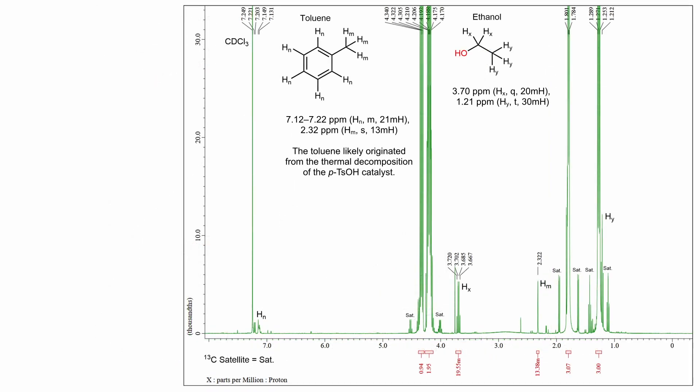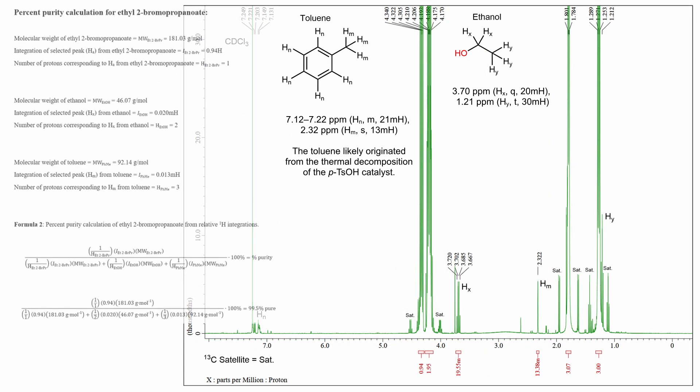Most of the smaller peaks around the baseline can be attributed to carbon-13 satellite signals. Although it can be seen that there is also a very small amount of ethanol, as given by the presence of a quartet at 3.7 ppm. And based on the integration value of this peak, it shows that there is 0.3% ethanol contamination by weight.